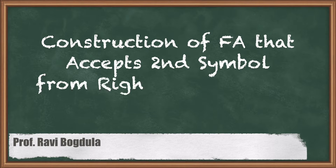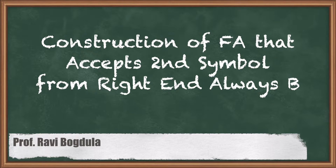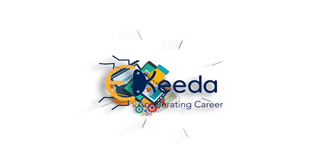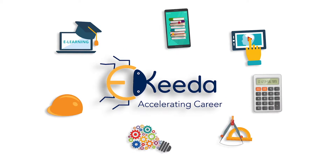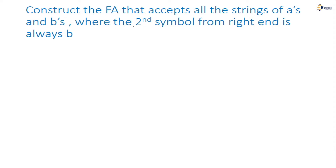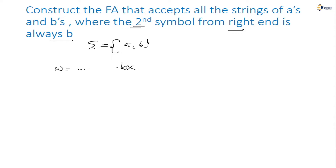Hello students. Our next topic is: construct the FA that accepts strings in which the second symbol from the right is always b. So the second symbol from the right must always be b. The first symbol and second symbol must be b, and the third and fourth symbols could be anything.